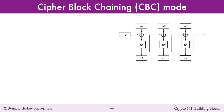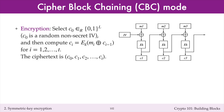Cipher block chaining, or CBC mode, is a randomized mode of encryption. In CBC mode, encryption is performed by first selecting a random block C0. C0 is a random, non-secret initialization vector. Then, the plaintext blocks are encrypted as described in this equation, and shown in the diagram.